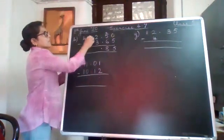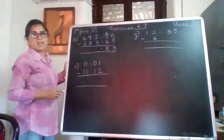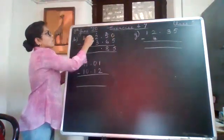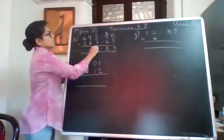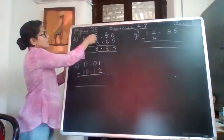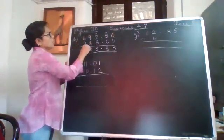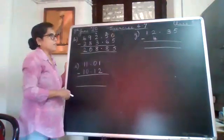This has become 1 because you have borrowed 1 that side. Now 1 minus 3, again not possible. You borrow from here, so this becomes 11. 11 minus 3 is 8. Now this has become 8 because you had borrowed 1 there. 8 minus 8 is 0, and 4 minus 2 is 2. 208.85.